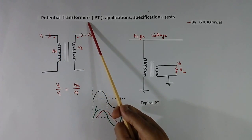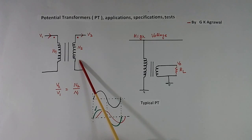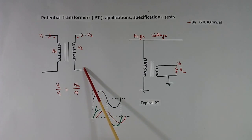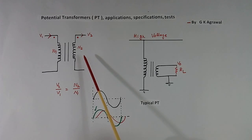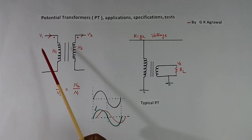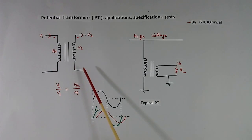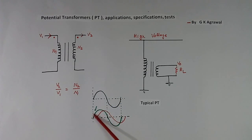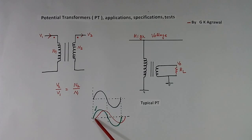A potential transformer is a step-down transformer which provides voltage in the secondary in correct magnitude and phase. Correct magnitude means the secondary will be proportional to the primary. Correct phase means there is no phase shift between primary and secondary voltage. As shown here, the green color is correct because there is no delay or phase shift, but the red color is not okay — there is a phase shift present.